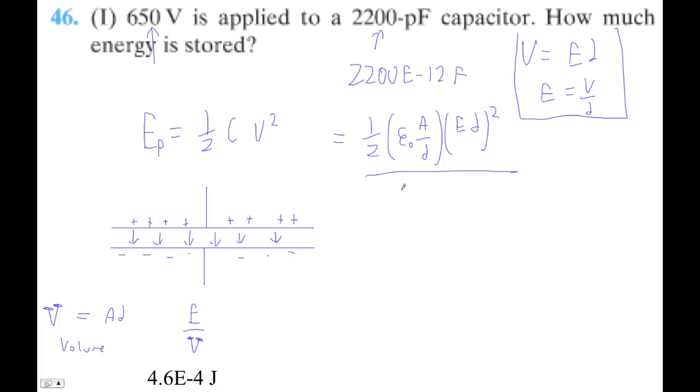And then if we divide that by area times D, what do we get? We get the area cancels out. And the distance cancels out one of those. And then the distance, this distance cancels out the other one.